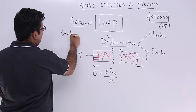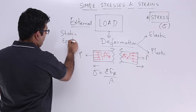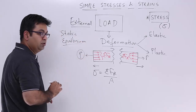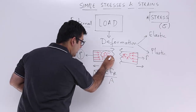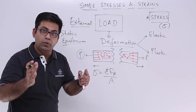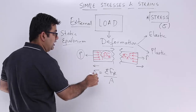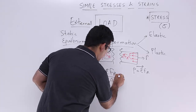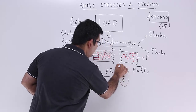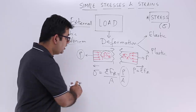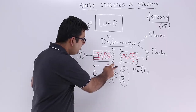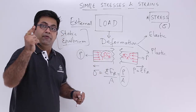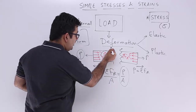Now if you look at this entire body, it is under static equilibrium — it is not going anywhere. This means the summation of the internal resistive forces equals the external load, so P = Σfr. I can therefore substitute Σfr with P, giving sigma = P / A. This is the formula you will find in almost every textbook, but this is how you understand it — sigma is not simply P/A; P/A arises because the body is in static equilibrium.